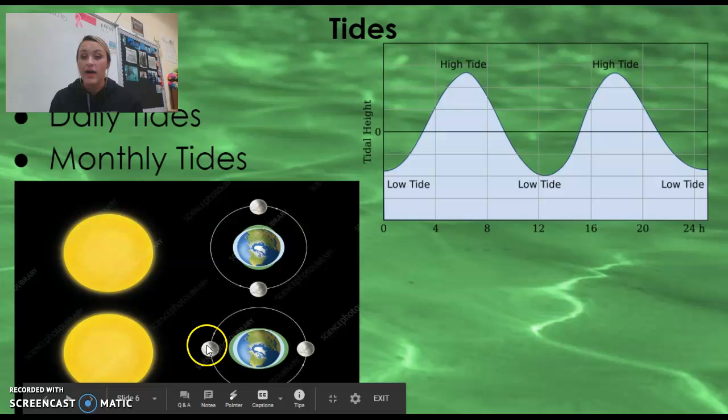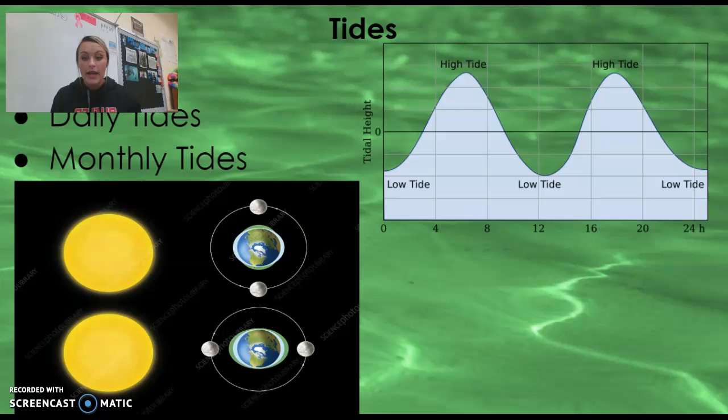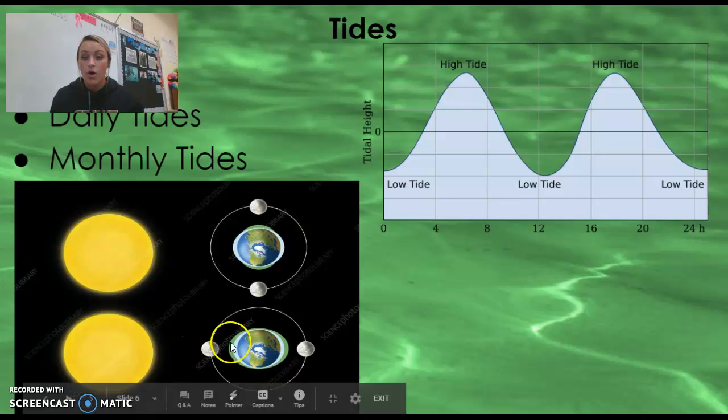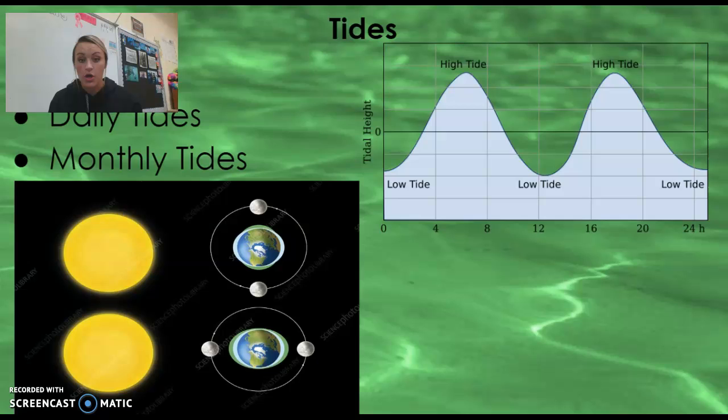On the other hand, when we find our moon phases that are new and our full moon, this is where we start to see that gravitational force, that centrifugal force, both working together and actually causing that water to bulge out on our sides of the earth where it is in line with the sun, the earth, and the moon. These are our spring tides. So this is where we have a very large tidal range. Your high tide is super high, and your low tide is super low.